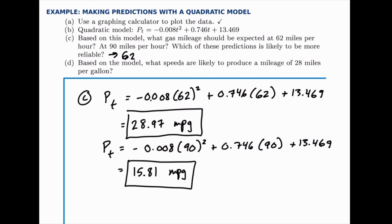For the last part, we want to predict now in the opposite direction. We're given a mileage and we want to figure out what speeds are likely to produce that mileage. For part D, we actually need to go back to the calculator and we'll plot this model that we've been given, and we'll plot the straight line y = 28, and we'll see where the intersections are.